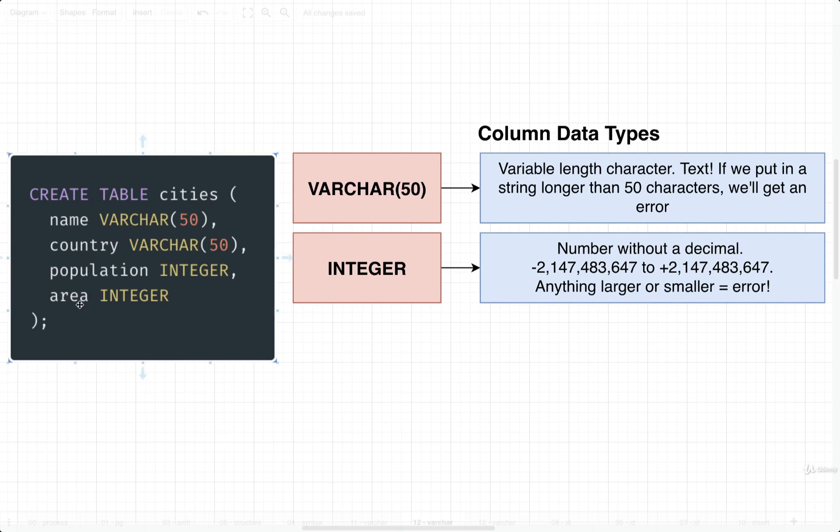Population and area designated a type of integer. Integers in Postgres are numbers without decimals. They can range from about negative 2 billion to about positive 2 billion. If we ever try to insert a value into population or area larger or smaller than negative to positive 2 billion, then we're going to end up getting an error.